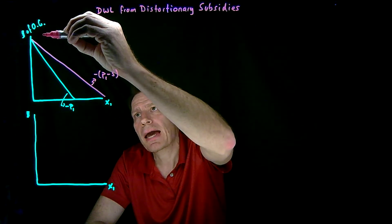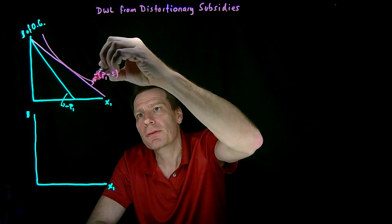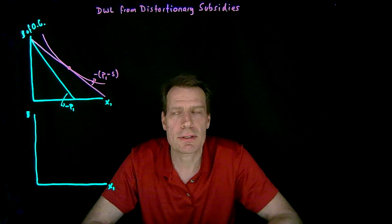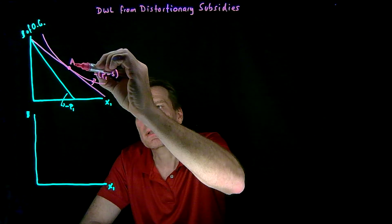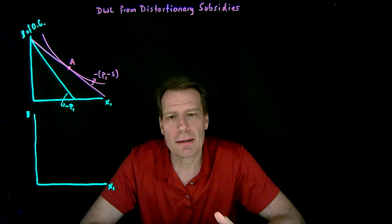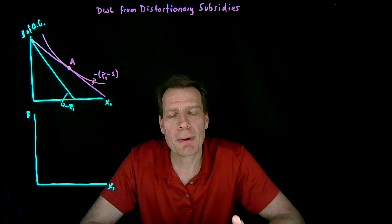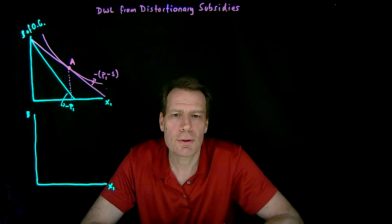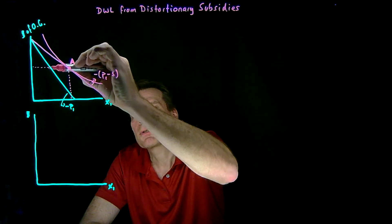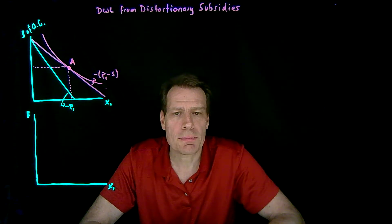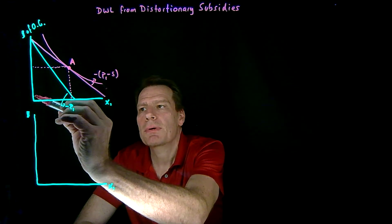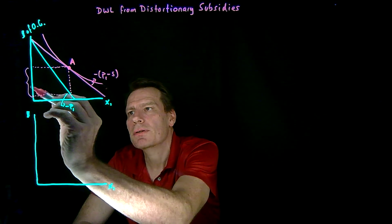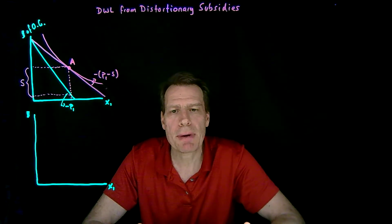We need to figure out where the consumer actually ends up consuming after the subsidy, because there's no way to figure out how much the subsidy will cost the government without knowing how much of the subsidized good the consumer is going to buy. The consumer optimizes at some bundle A. After the subsidy, the consumer buys this much of good X1, allowing her to buy this much in other goods. Without the subsidy at full price, she could only have consumed this much in other goods — so that difference is the total subsidy payment S the government made.